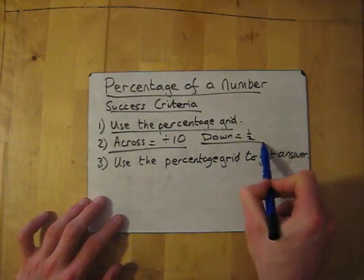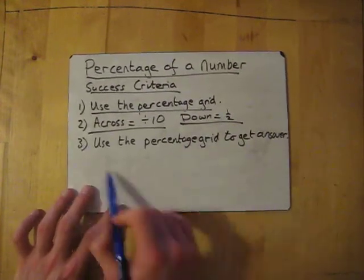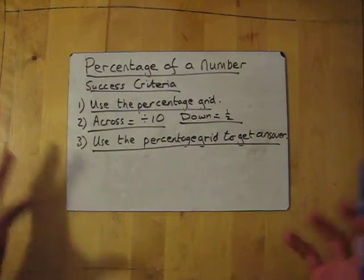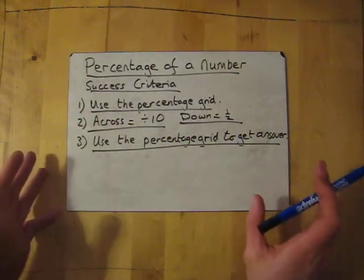Whenever you go down you half the number, and then finally when you've done the percentage grid, use it to get the answer. Use all the ones you need and sort it out.